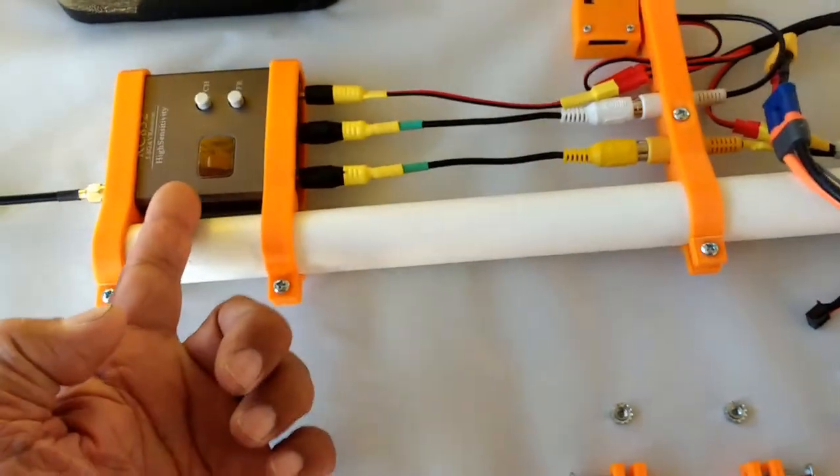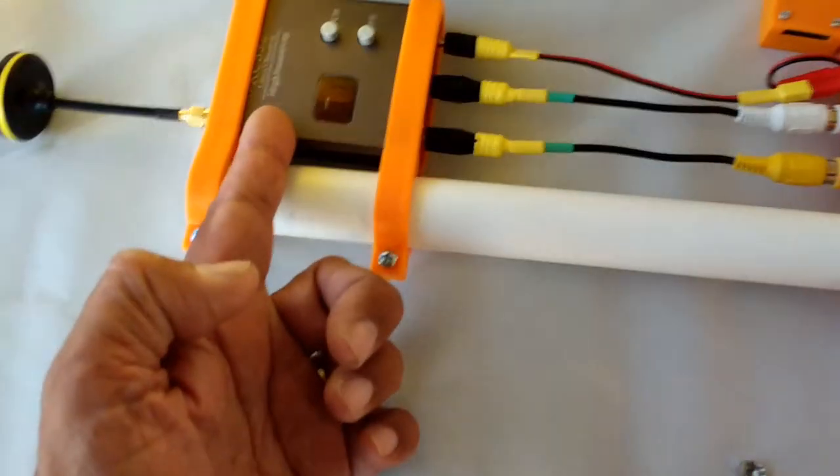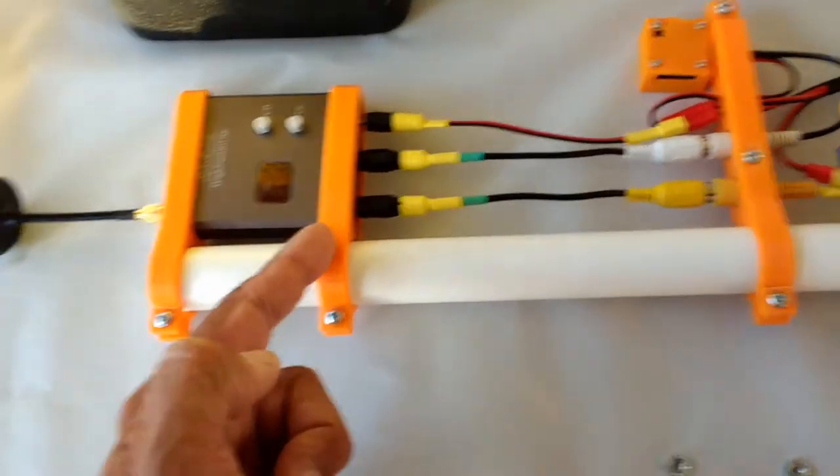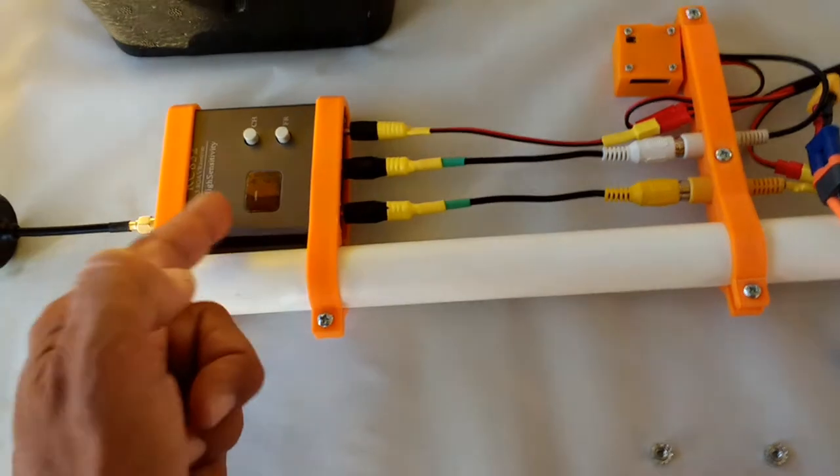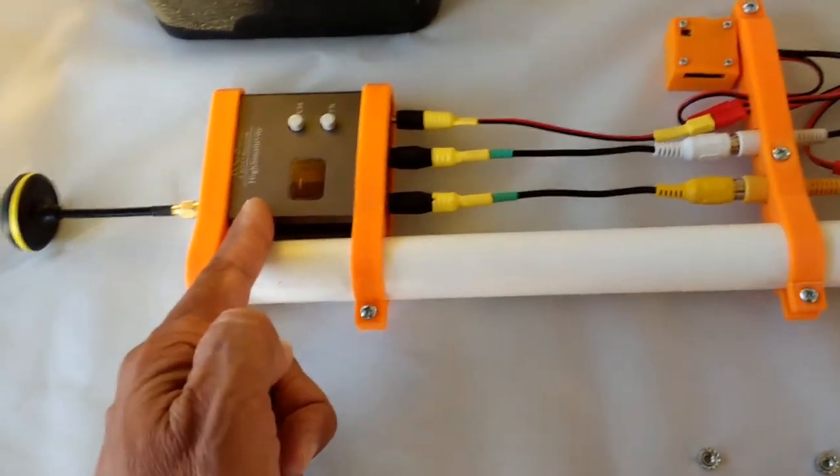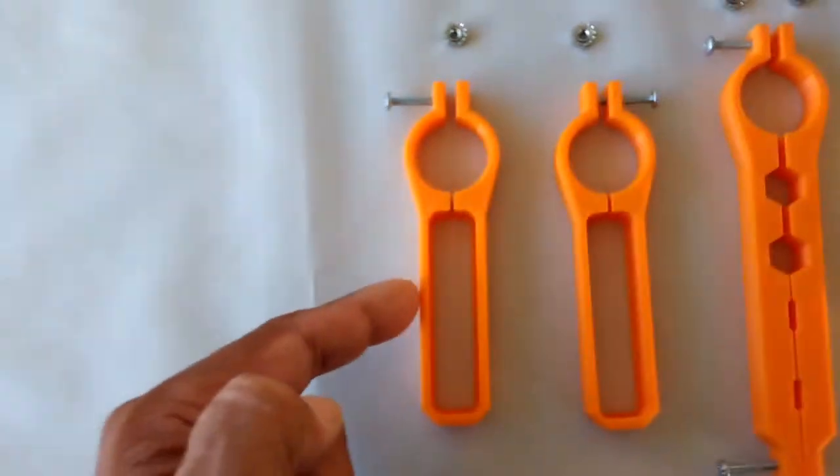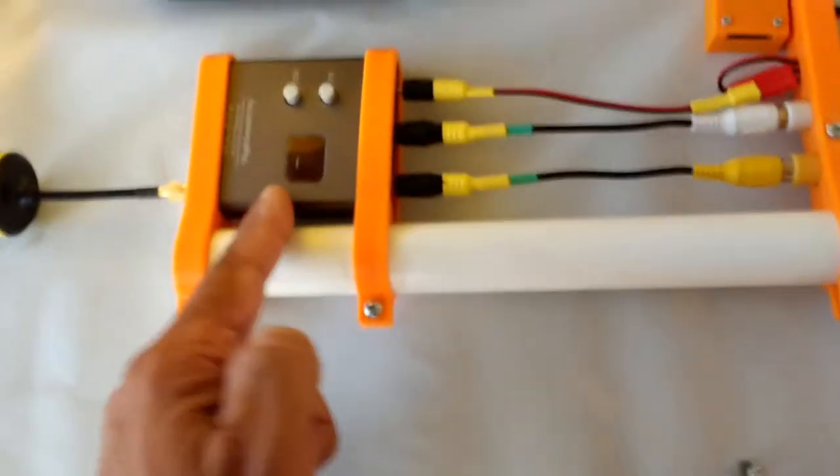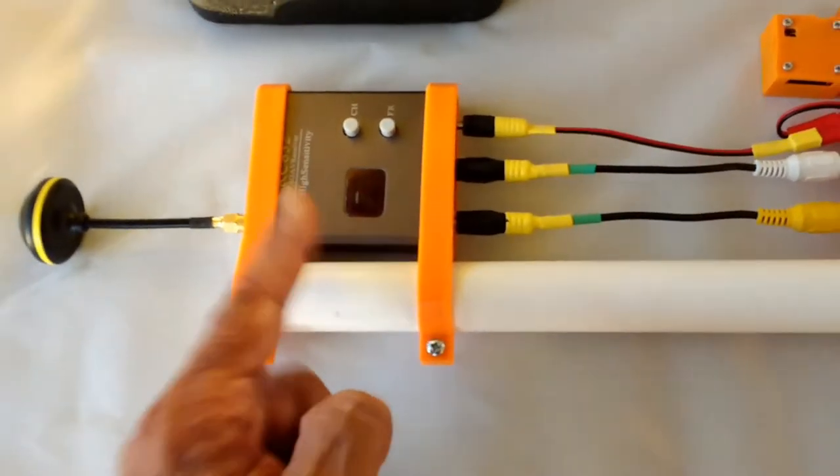You will of course need to provide your own receiver. I'm using the IRC832 which is what these parts are designed around. So if you have the same one or similar one it will fit inside these pockets here because these are clamps that have the pockets already for this receiver dimensions.